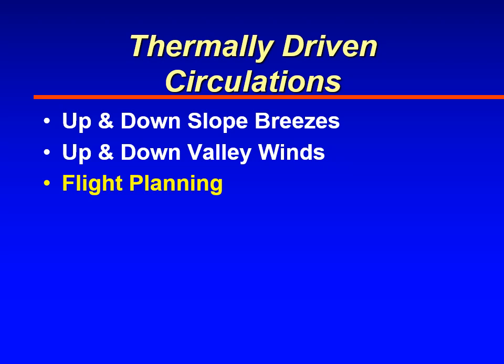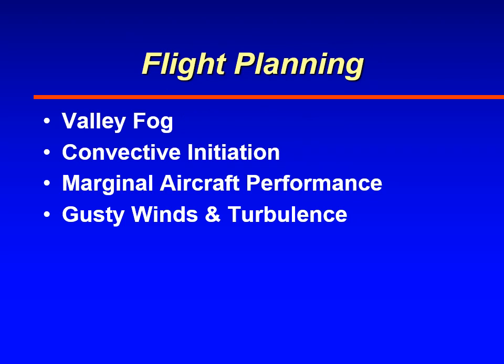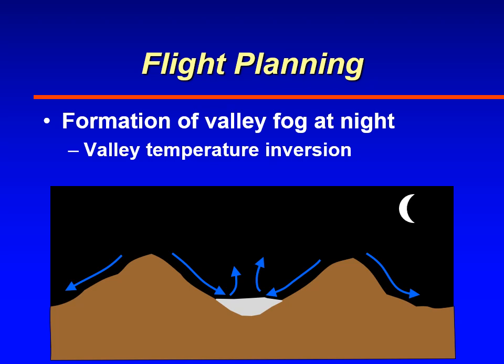Next, we'll discuss flight planning for thermally driven mountain circulations. Here are four areas to consider. First: valley fog. As cold air fills into the valley, if there's moisture present such as from a river, the colder air will reach the dew point and the valley will fill with fog. Since it's cold air below relatively warmer air, a strong inversion forms, which prevents that fog from burning off rapidly in the morning unless there is really strong heating.